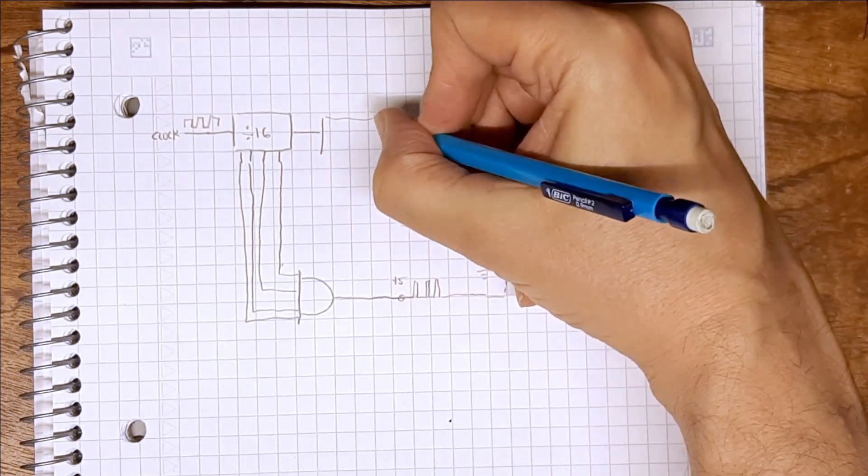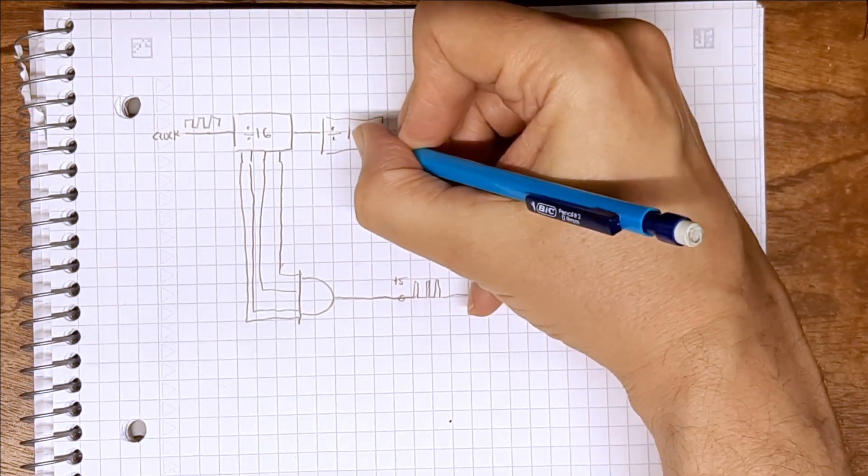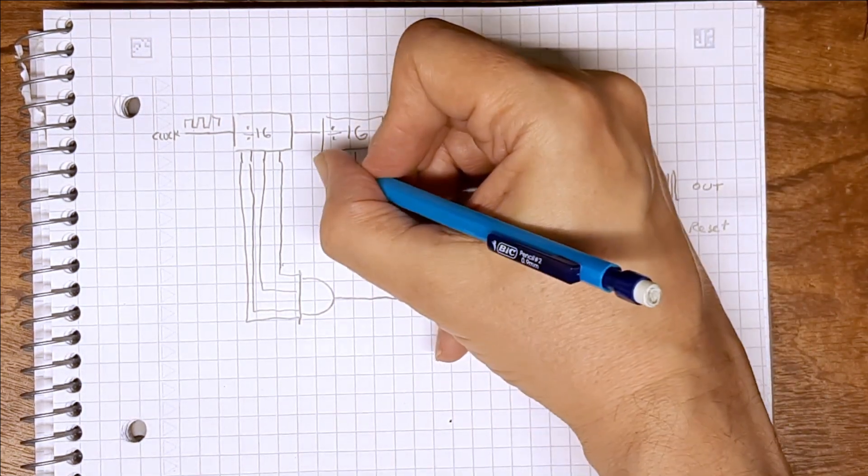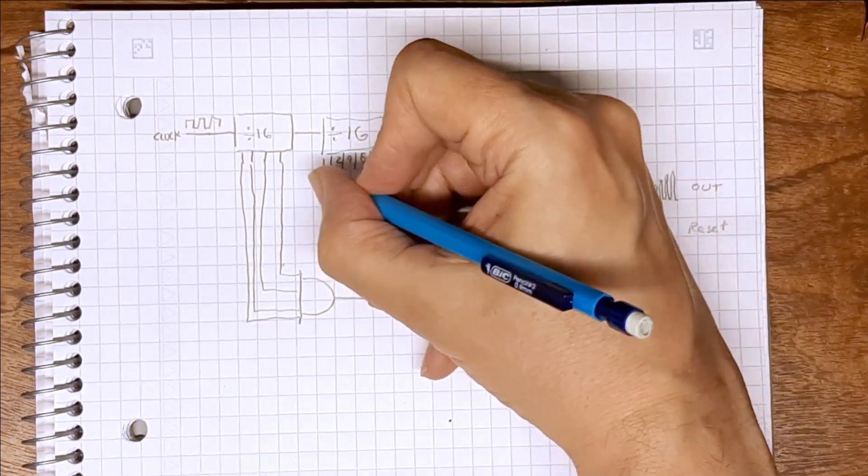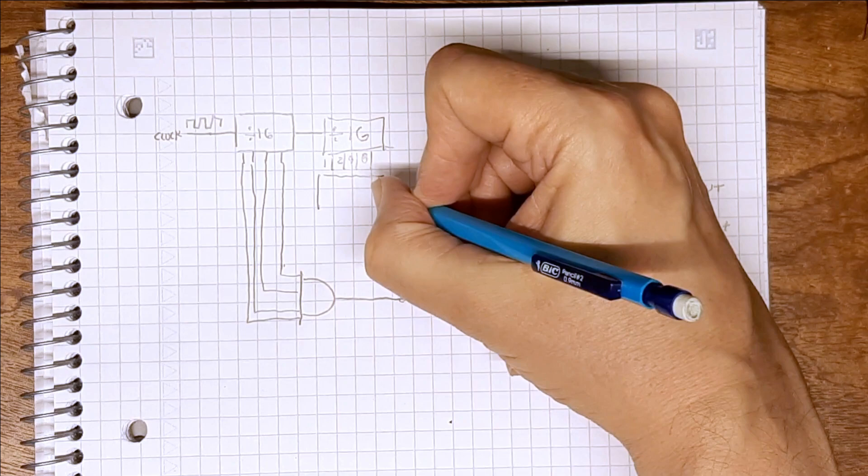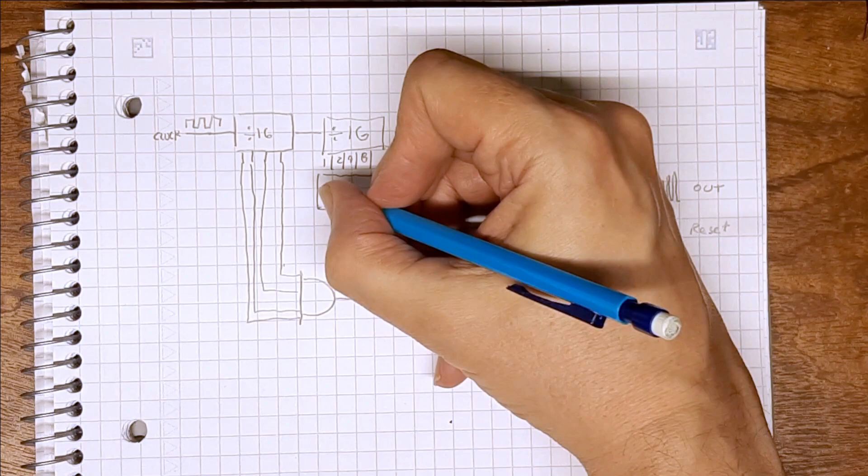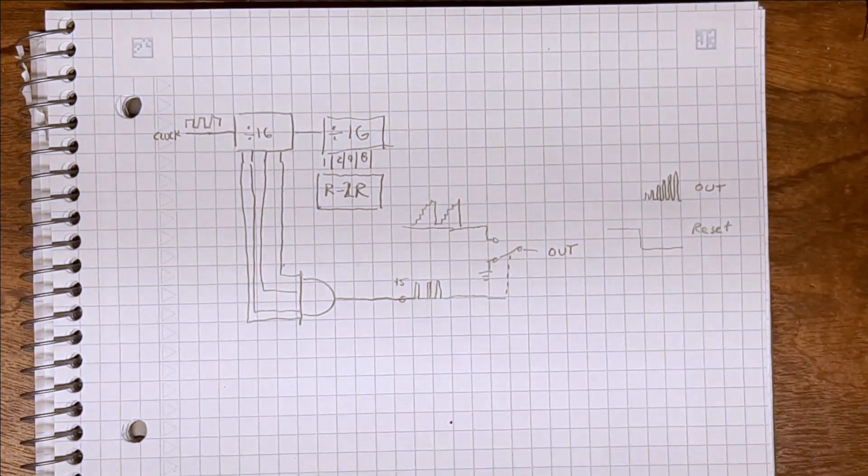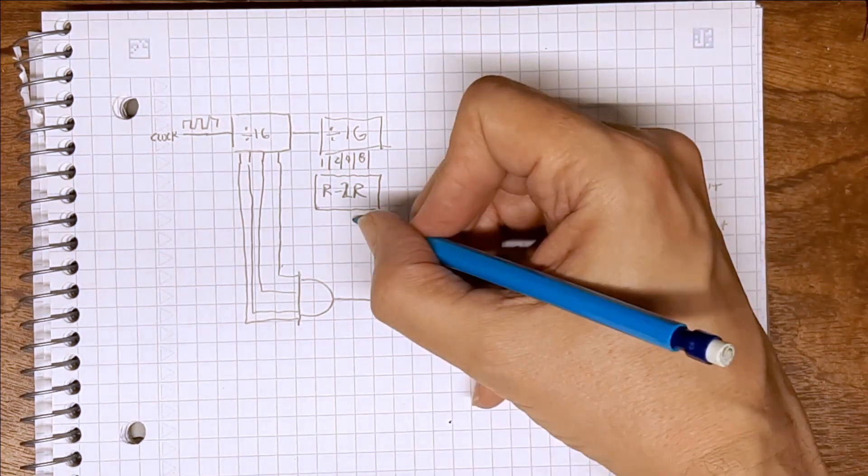Another divide-by-16 will give me a numeric output that I can feed into an R2R ladder. And that will give me the stair-step voltage.